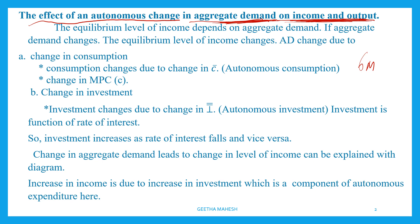Income and output — that is national production, that is national income. In aggregate demand, you can make an autonomous change. Why do we use the word autonomous? We have the aggregate demand equation: aggregate demand is consumption plus investment, government expenditure, and exports minus imports.